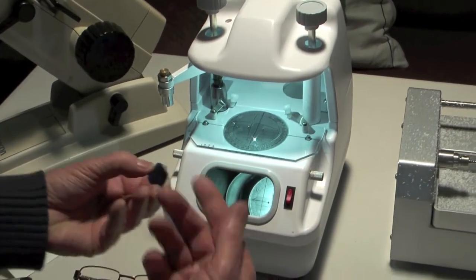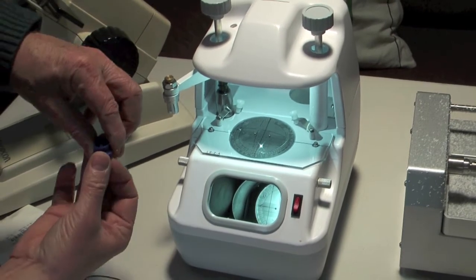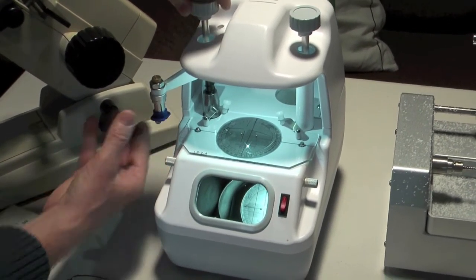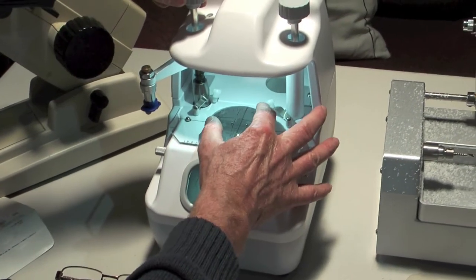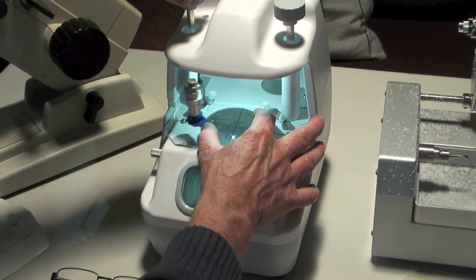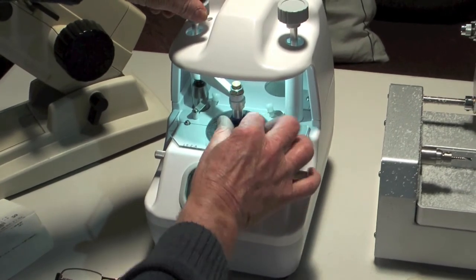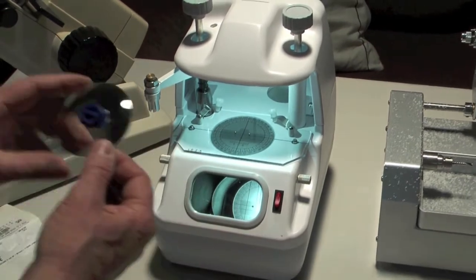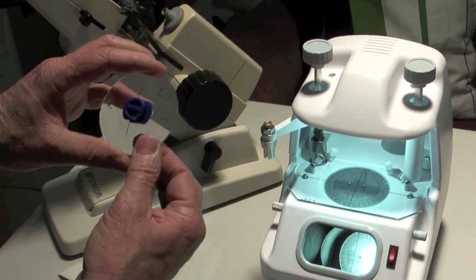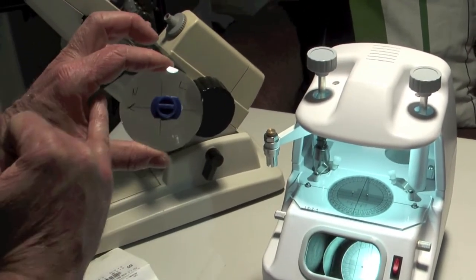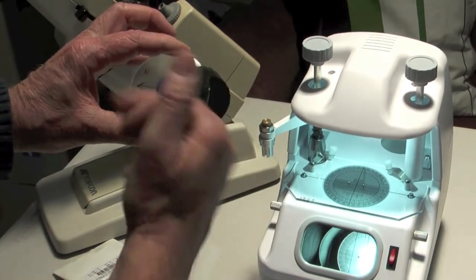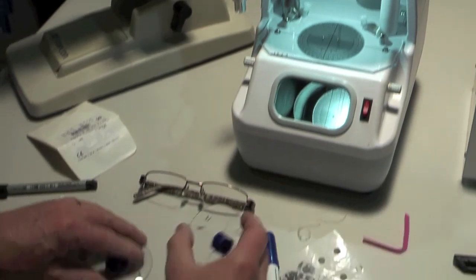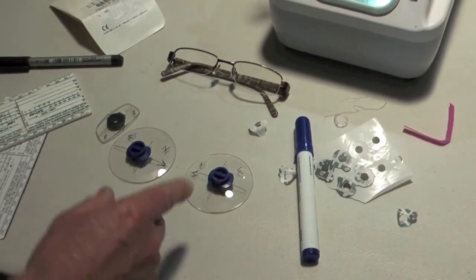So we're going to block up the left lens now. We put this on the machine and make sure that that's nice and in place, which it is. And that's great. So again, we have a lens that is being de-centered towards the nasal in the direction of the N by three and a half millimeters. So we've got two lenses now that are ready to be cut.